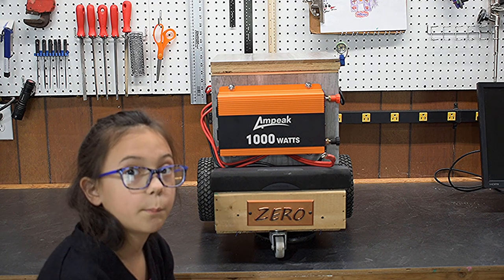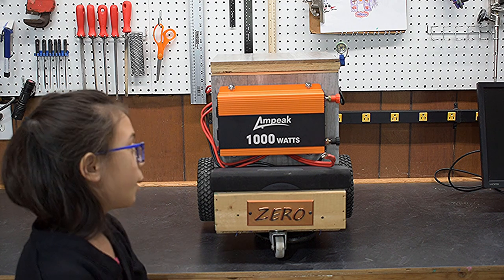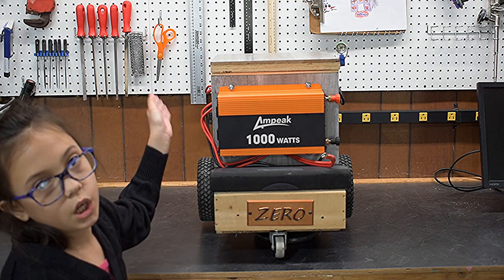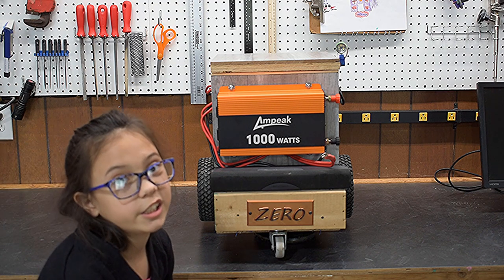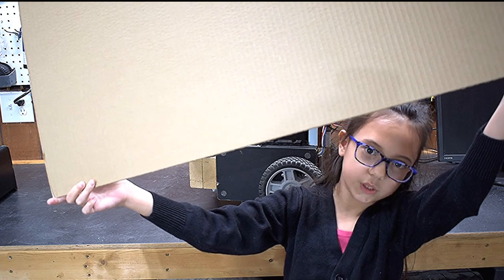So this is Zero with the battery and the inverter on it. But we need to put panels on him so we can't see that. Here is a panel where we can cover up Zero's nakedness.